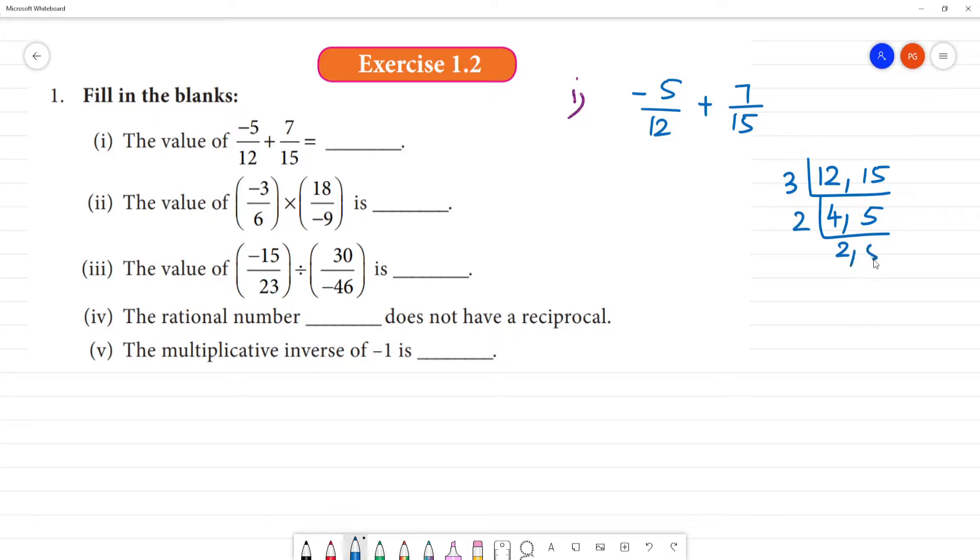The value of 2 is 4, then the value of 5. These are all prime numbers. Now, 3 into 2 is 6, 2 into 5 is 10, then 6 into 10 is 60. LCM is 60.